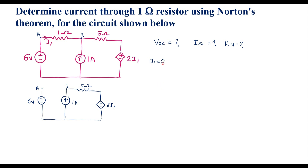When I1 is 0, the dependent source 2I1 also becomes 0, meaning the dependent voltage source is 0 volts. As we know, a zero-volt voltage source is equivalent to a short circuit. So the dependent voltage source is short-circuited, and instead of 2I1, we short circuit this element.